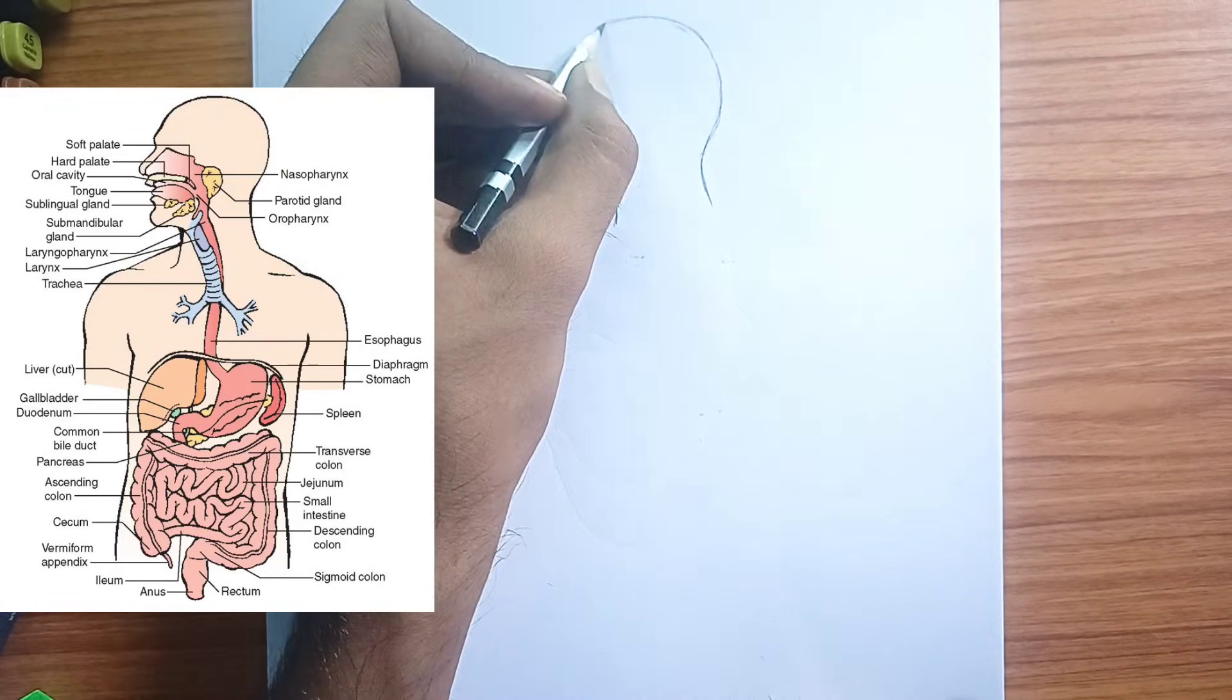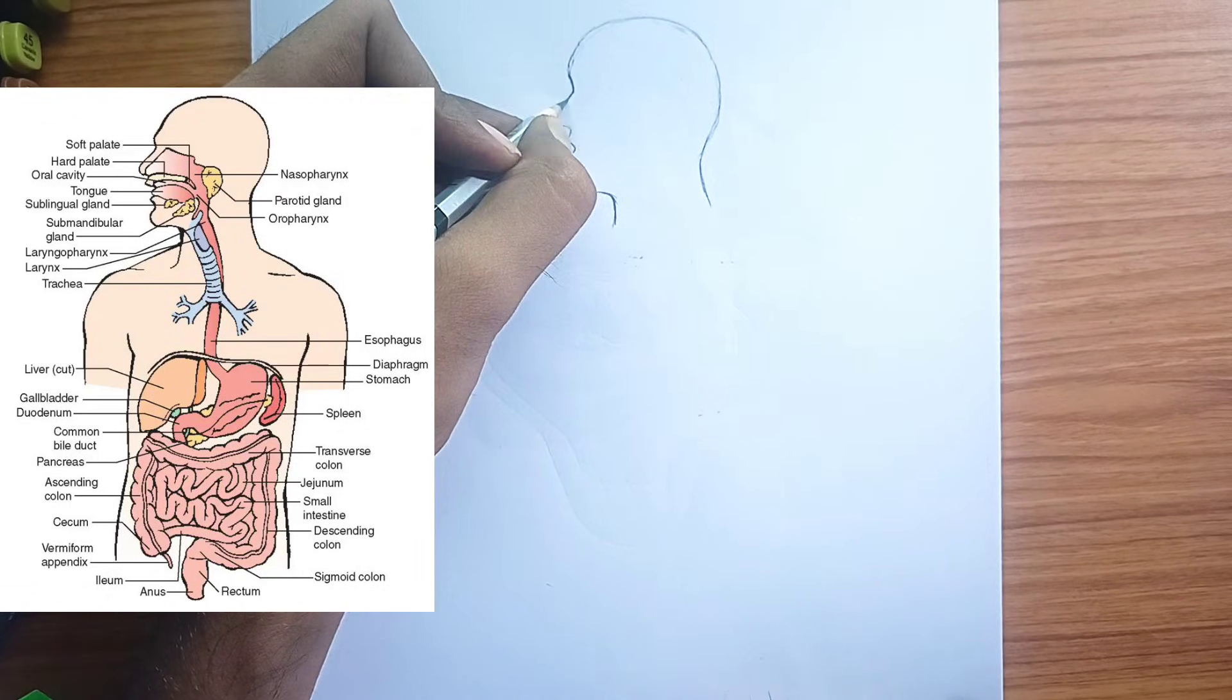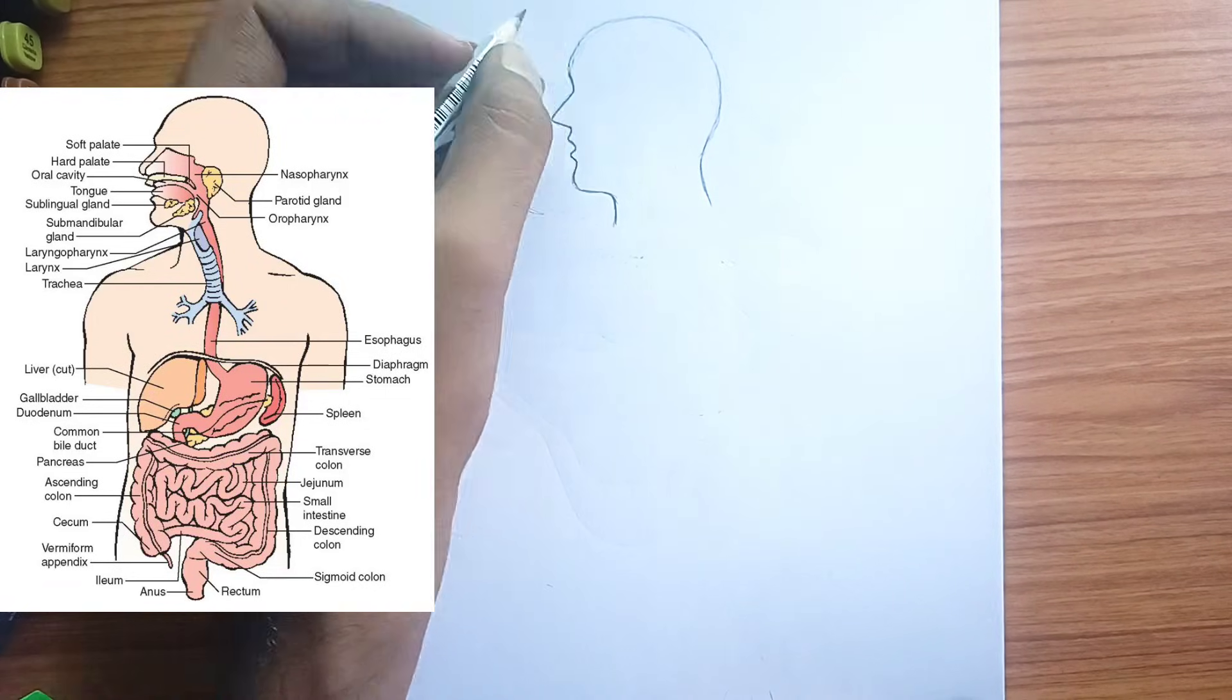Stomach: food is mixed with acidic gastric juices, further breaking it down into a soupy mixture called chyme. Both mechanical and chemical digestion of proteins occur here.